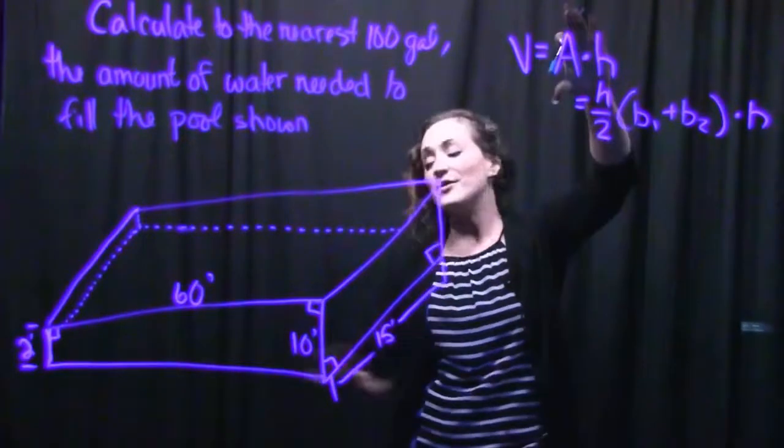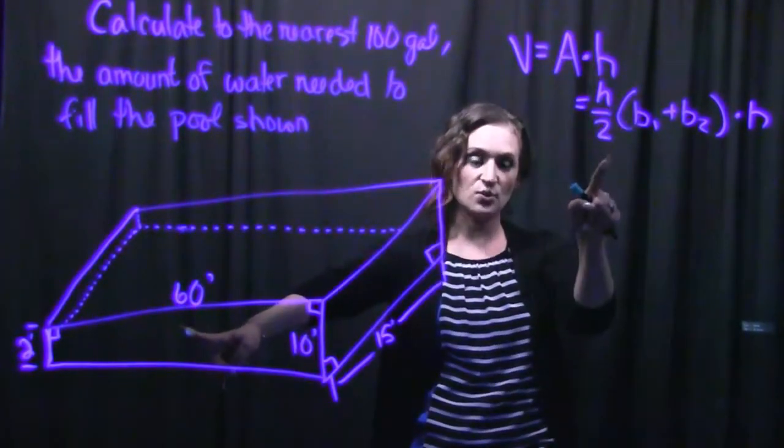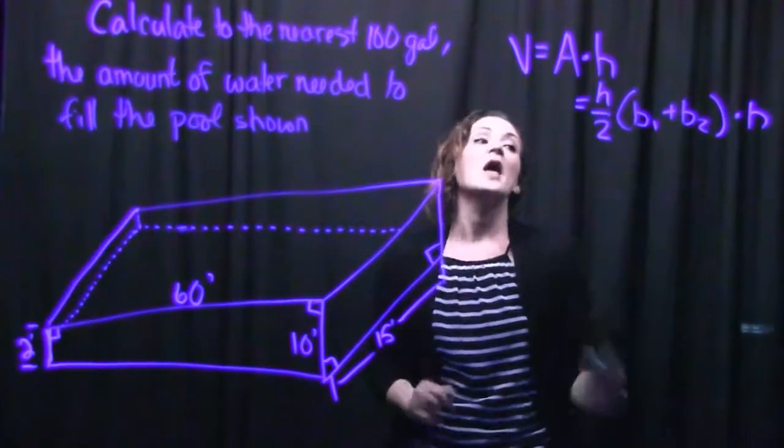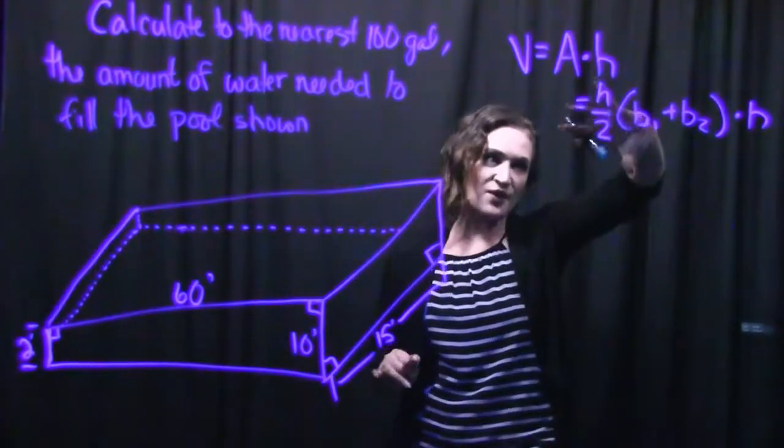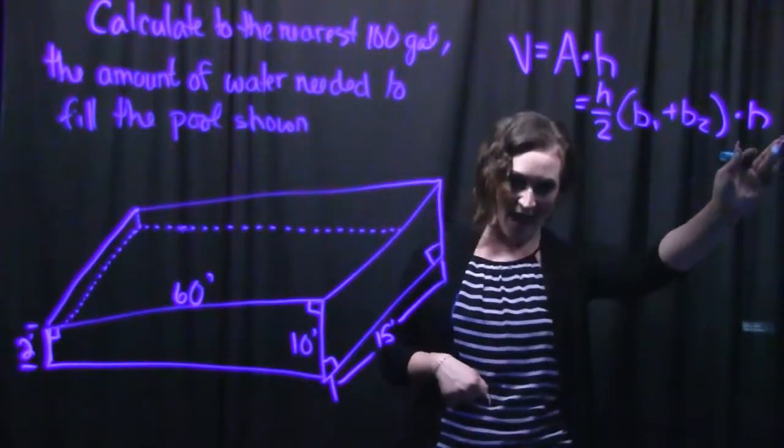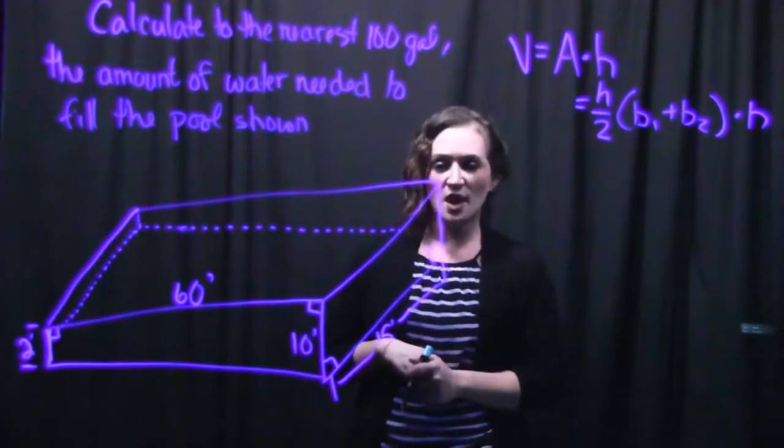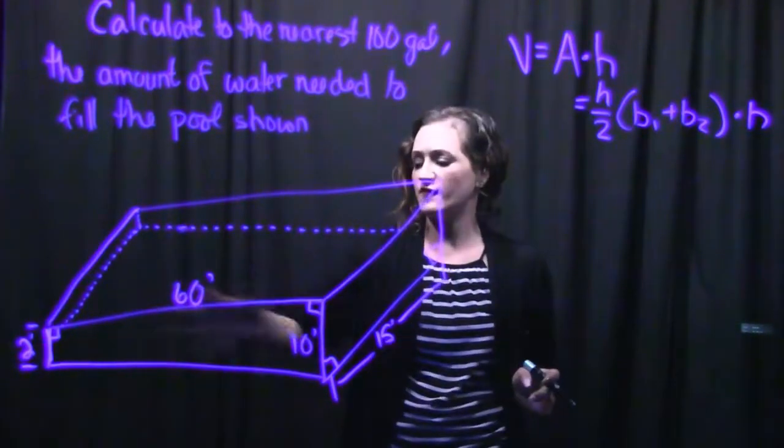So the area of this here is the height over 2, and then we're going to multiply by base 1 plus base 2. And once we get that area there, we will then multiply by the height of our figure here. So let's go ahead and plug into the formula of our trapezoid piece, so our face right here.